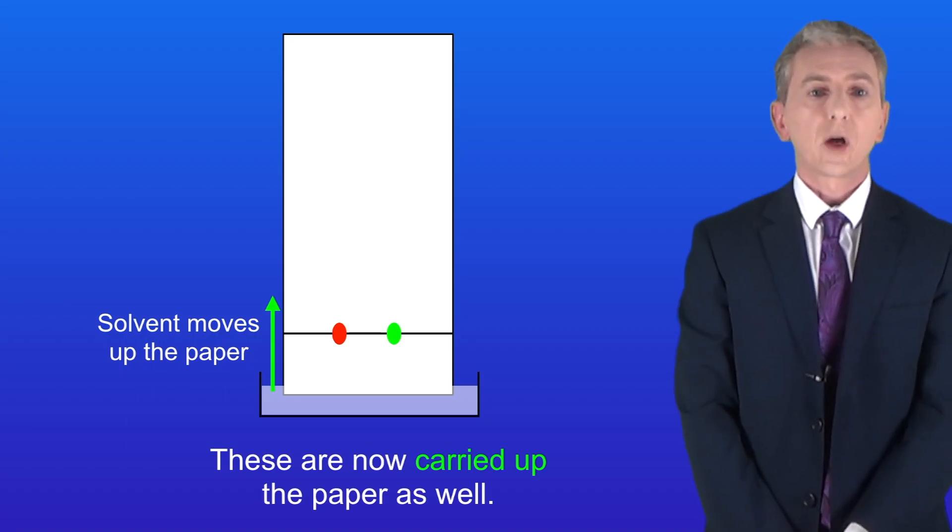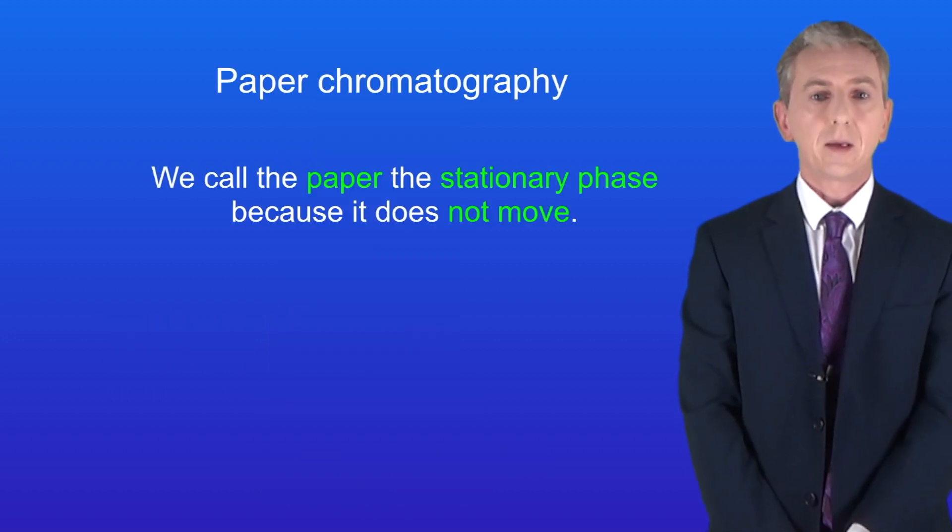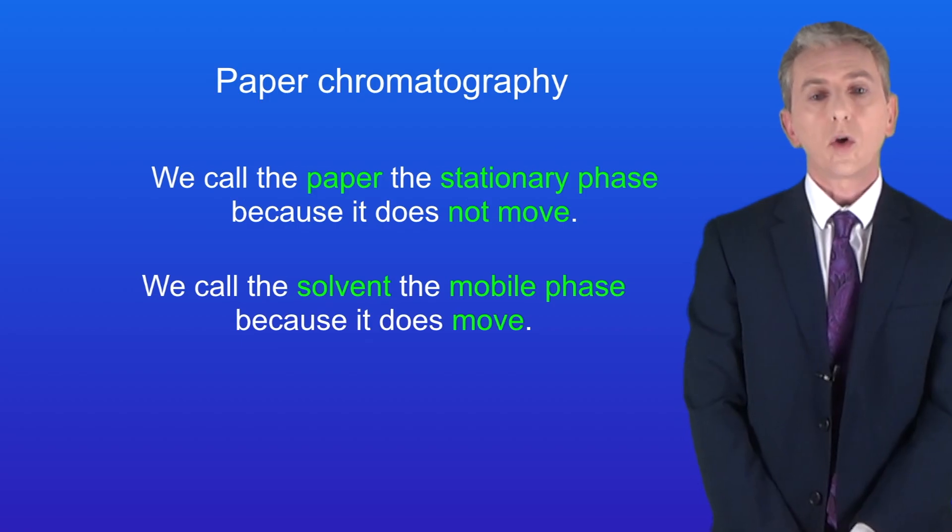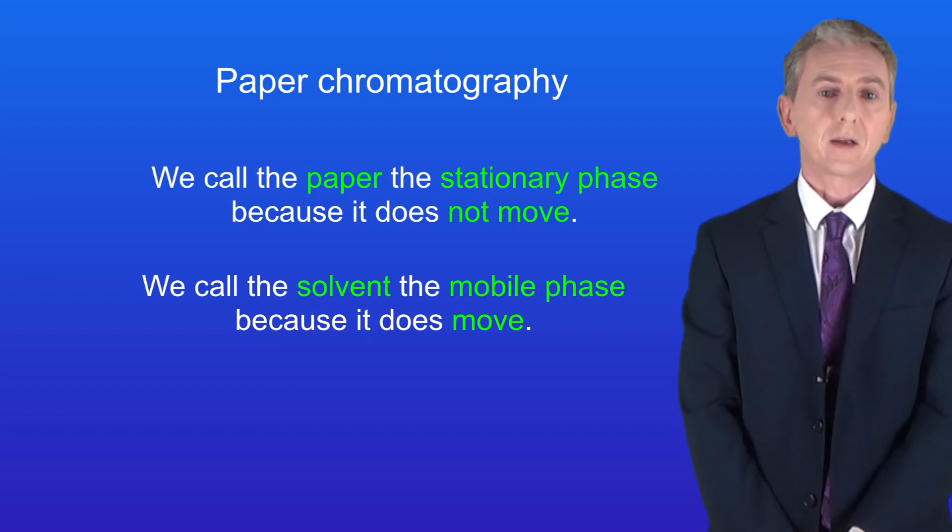Now here are a couple of facts that you need to learn. We call the paper the stationary phase because it doesn't move and we call the solvent the mobile phase and that's because the solvent moves.